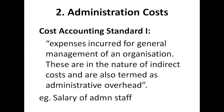Second one: administration cost, also called office cost. As per the definition given by cost accounting standard one, these are expenses incurred for general management of an organization. They are in the nature of indirect cost and are also termed as administration overhead — an aggregate of indirect material, indirect labor, and indirect expenses incurred for general management of the organization.